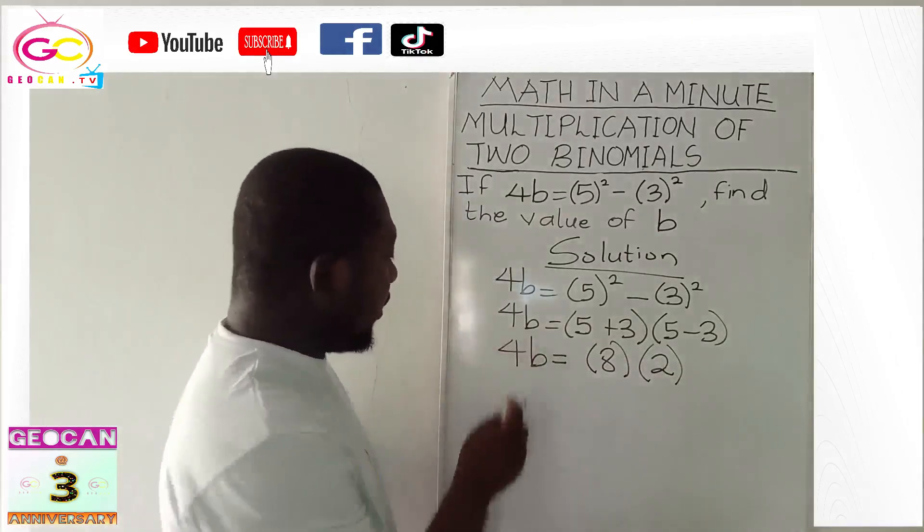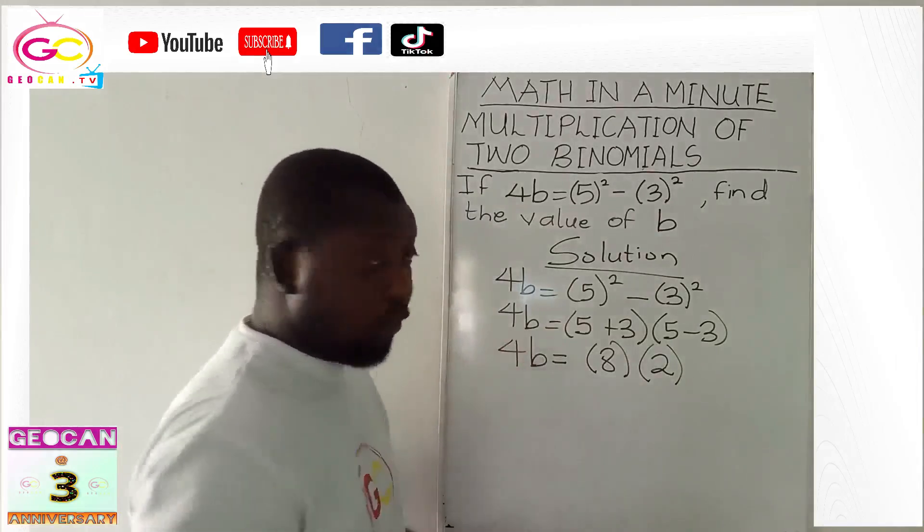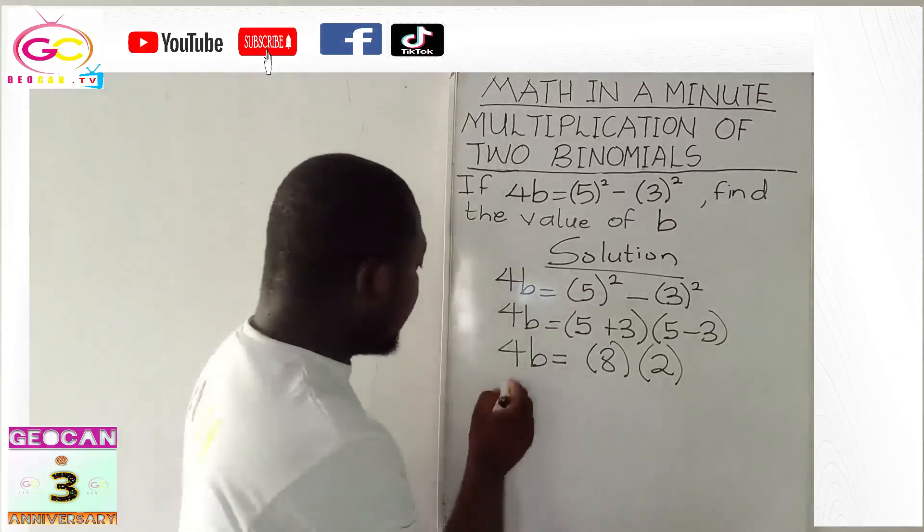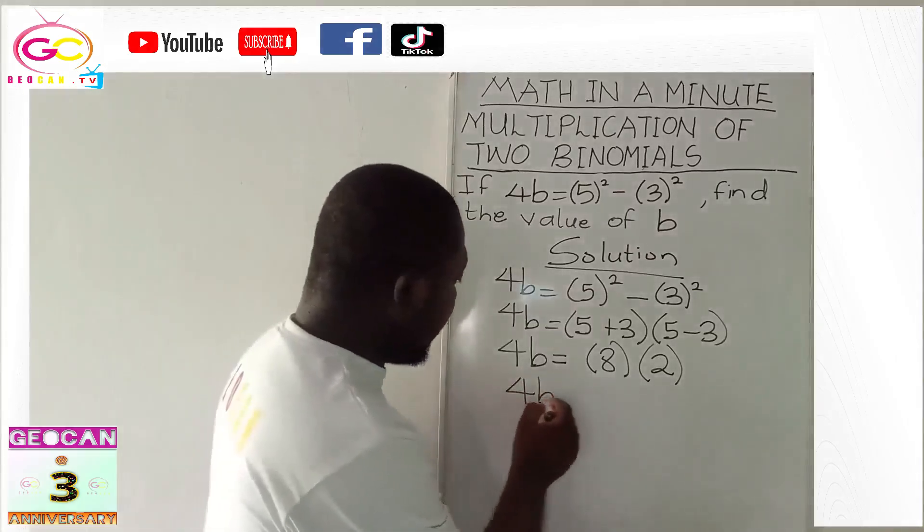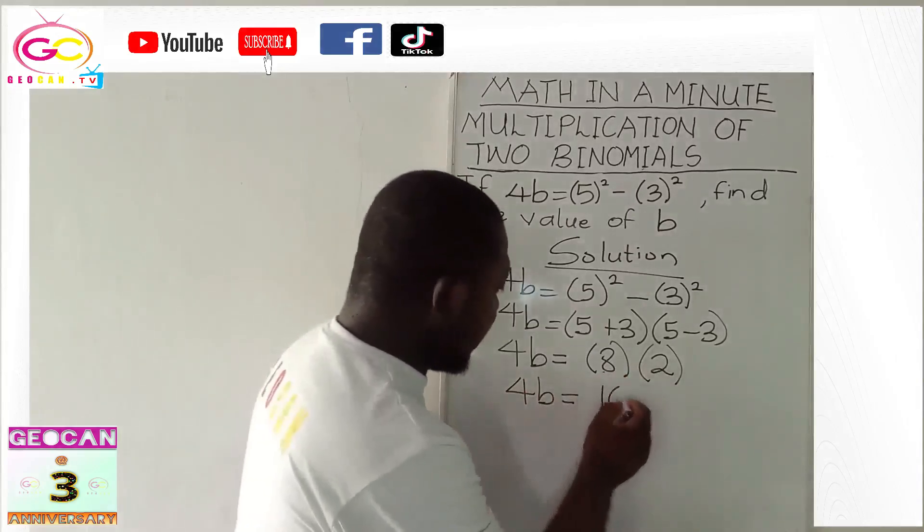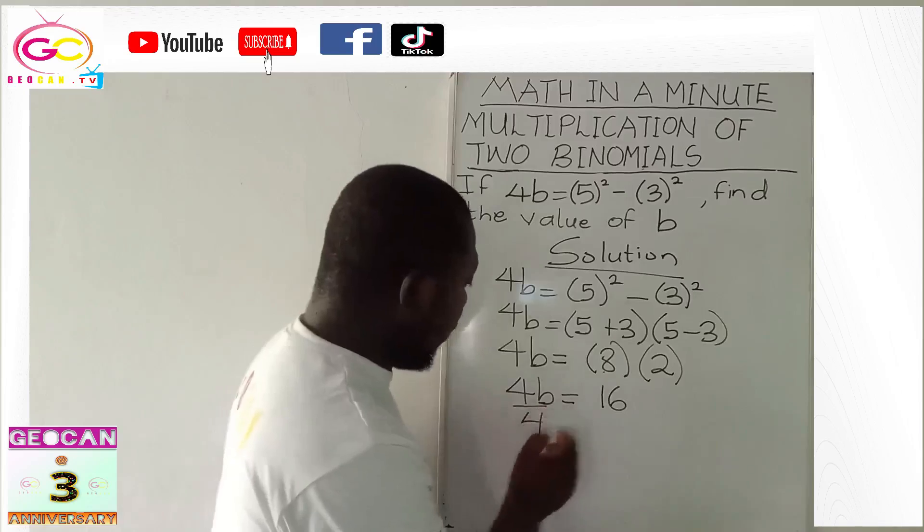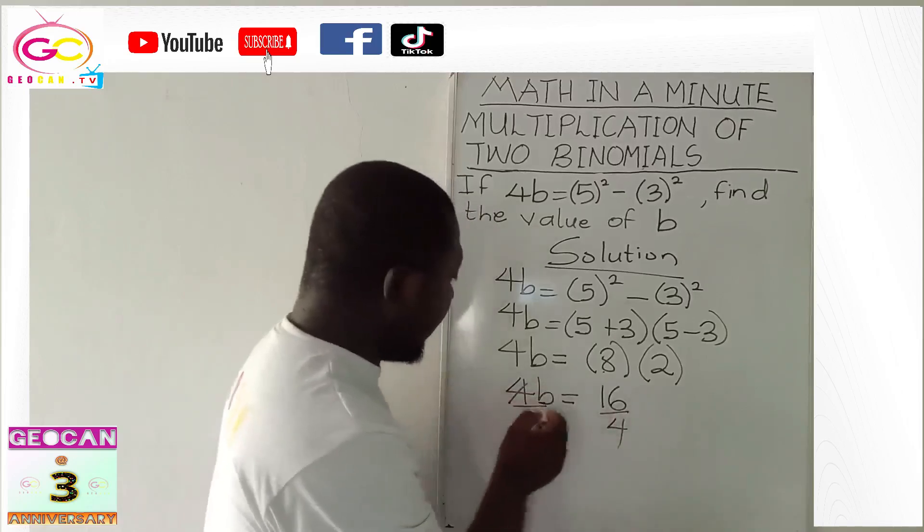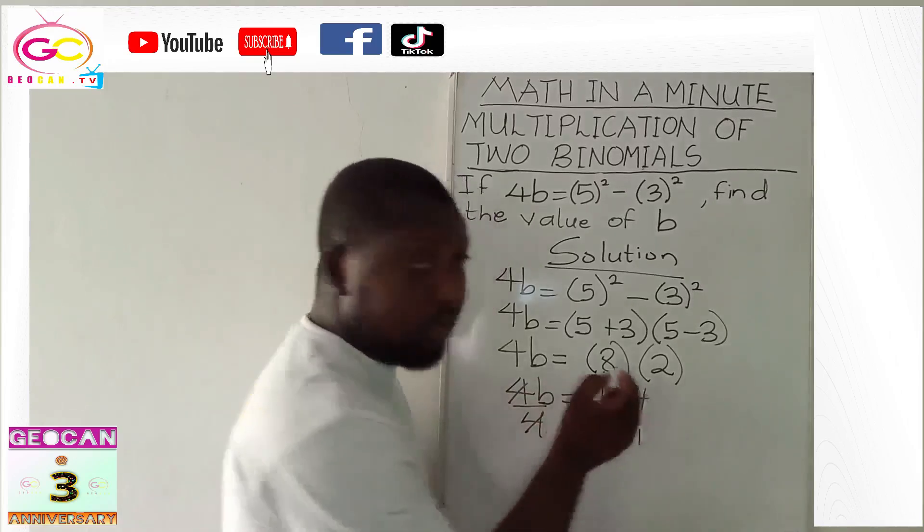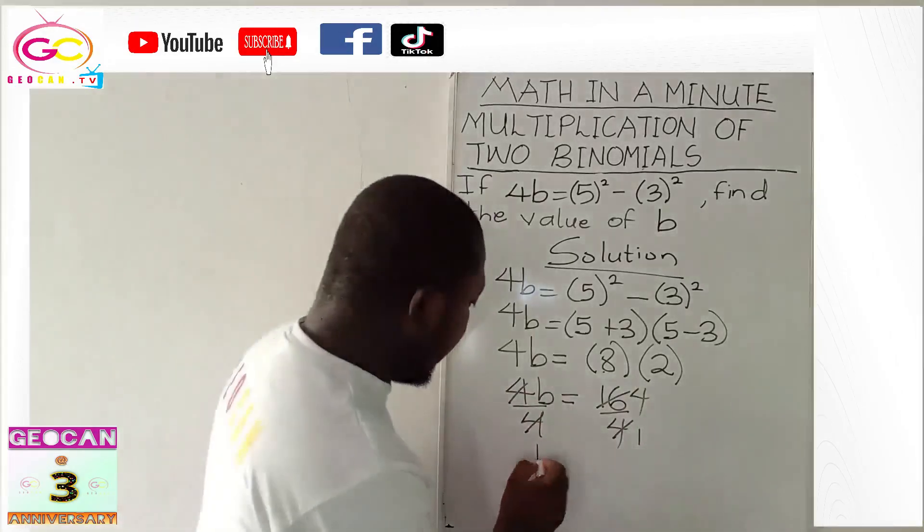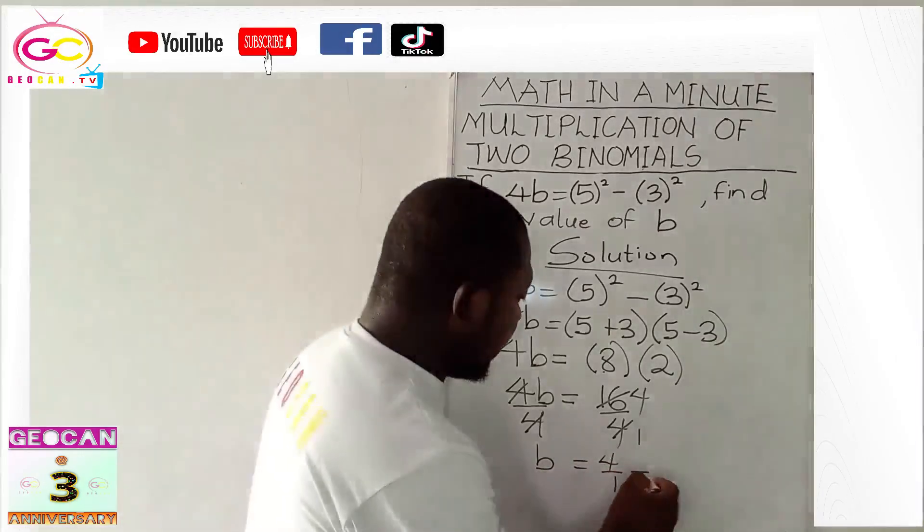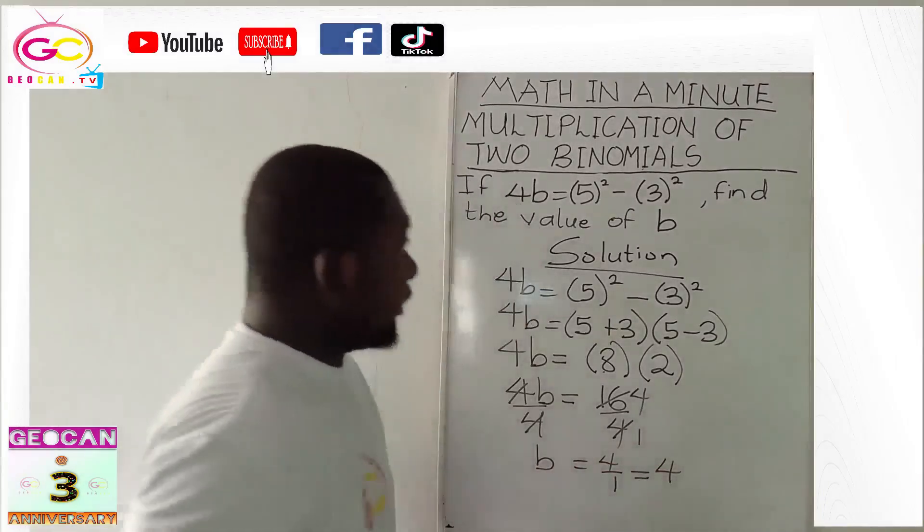Now, what do we have closer to b? We have 4. What it means is that you divide both sides of the equation by 4. So, you have 4b will be equal to, but take note now. 8 times 2 will give us 16. So, you can divide by 4. 4 cancels 4. 4 will go into 16 how many times? 4 times. So, b will be equal to 4 over 1. Any number over 1 is the same as that number. So, the answer is 4. The value of b is 4.